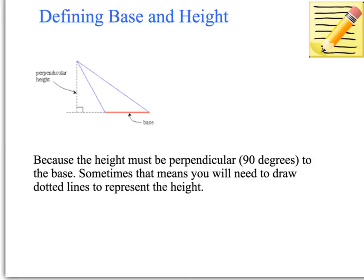Some triangles won't allow you to join the base to the opposite vertex without going outside the triangle. In those cases, you need to draw dotted lines to represent the height. For example, on this triangle, the vertex is here — if you draw a straight line down at right angles to the base, it falls outside the triangle. So we draw dotted lines extending from the base, intersecting with the vertex perpendicularly, and that dotted line is the height you must measure.